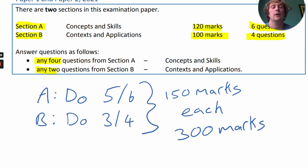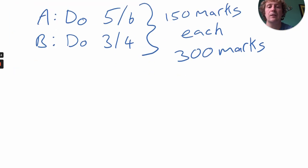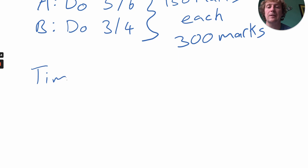If we do 5 out of 6 in Section A and 3 out of 4 in Section B, that makes our timing easy. Our timing is going to be the same as what it would be in a normal Leaving Cert year.